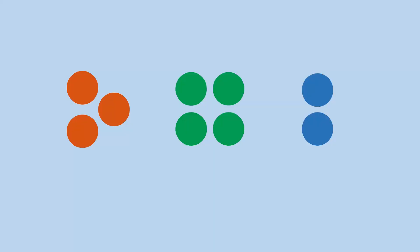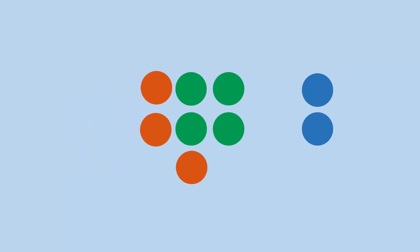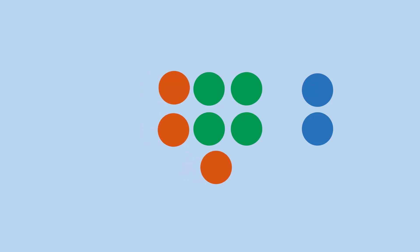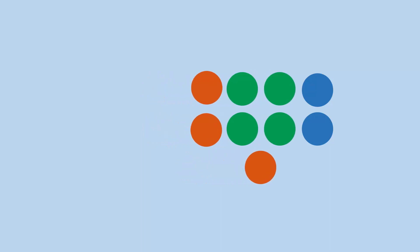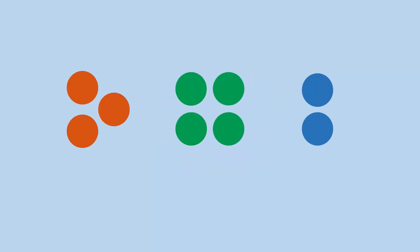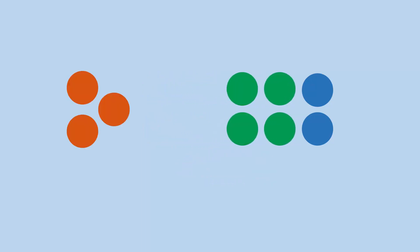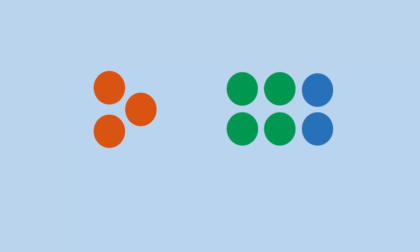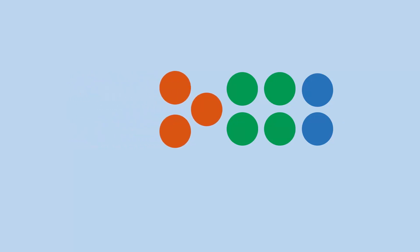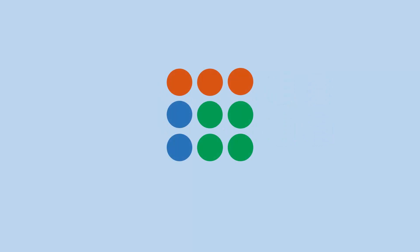Consider these three groups of balls. We can add them in two different ways. The red and green balls can be added first before adding the result to blue balls. Or the green and blue balls can be added first before adding the red balls to them. Whichever method we choose, the final answer will not change.